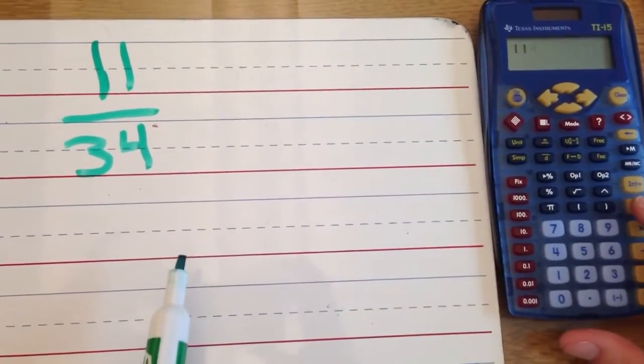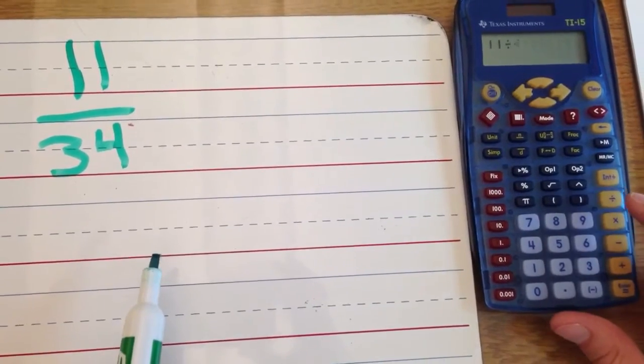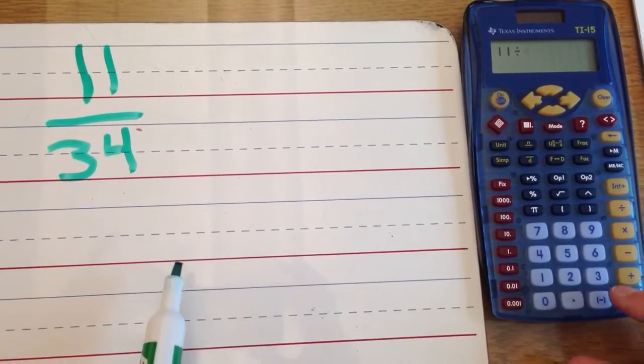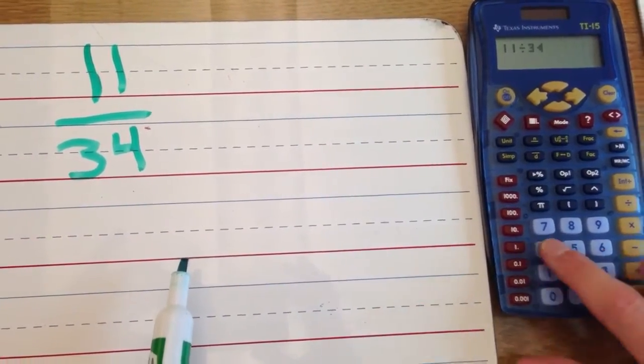We hit the division sign, and then type in our denominator. And our denominator is thirty-four.